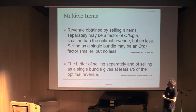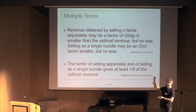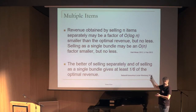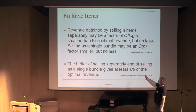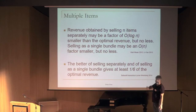So the outcome is that there is a qualitatively simple way of selling a large number of items that gives a constant fraction of the optimal auction revenue. The simple way is not just selling separately or bundling, but taking the better of the two.